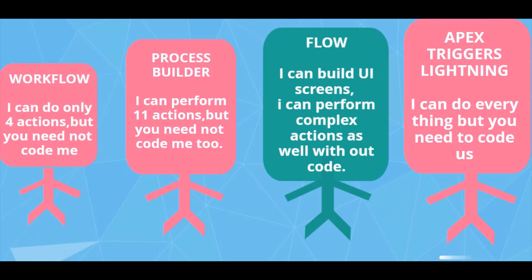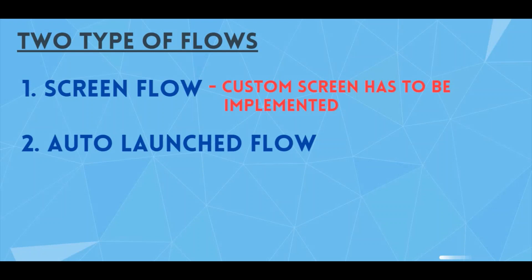We have two types of flows: screen flow and auto-launch flow. To decide which to use: whenever a custom screen has to be implemented, go for screen flow; otherwise, go for auto-launch flow. Examples for screen flow include displaying a registration form, a feedback form, or implementing approval steps — these require a screen flow.